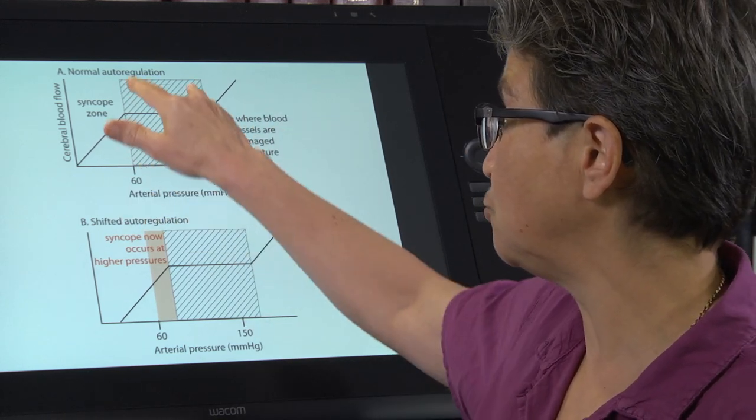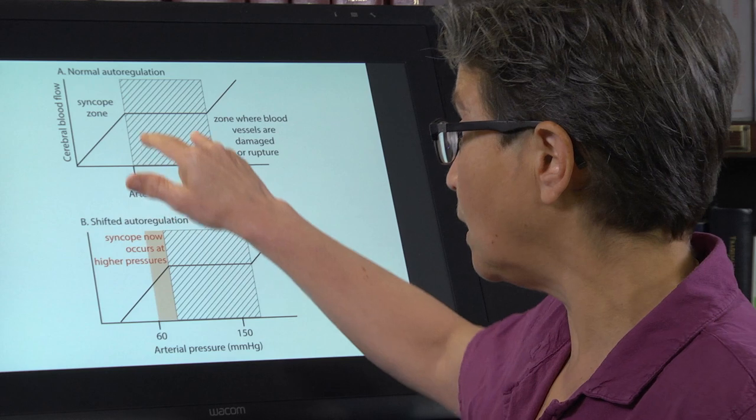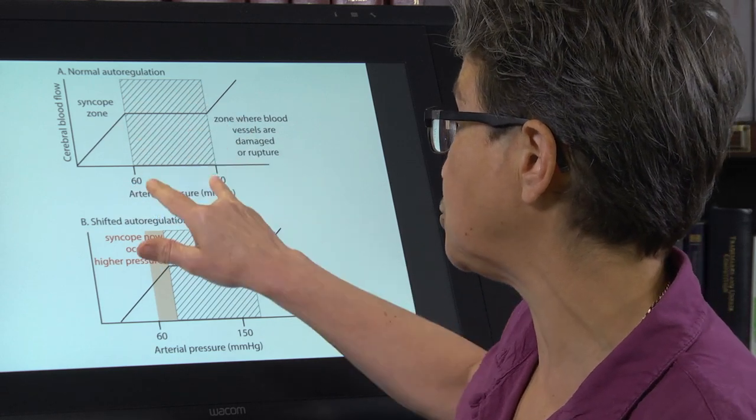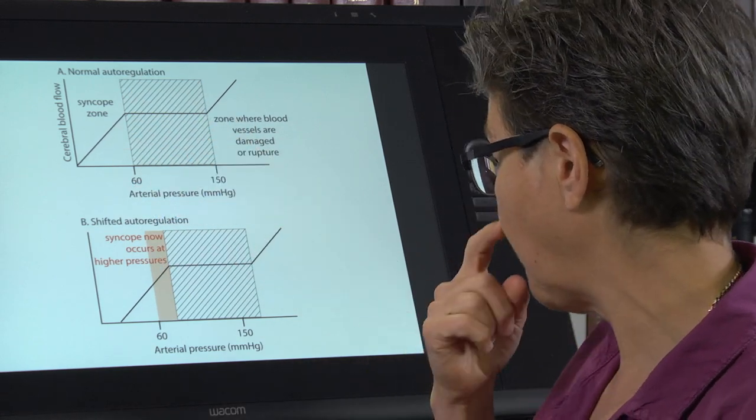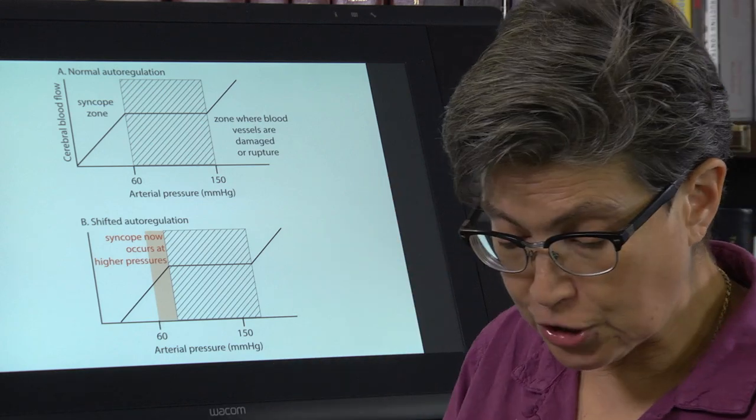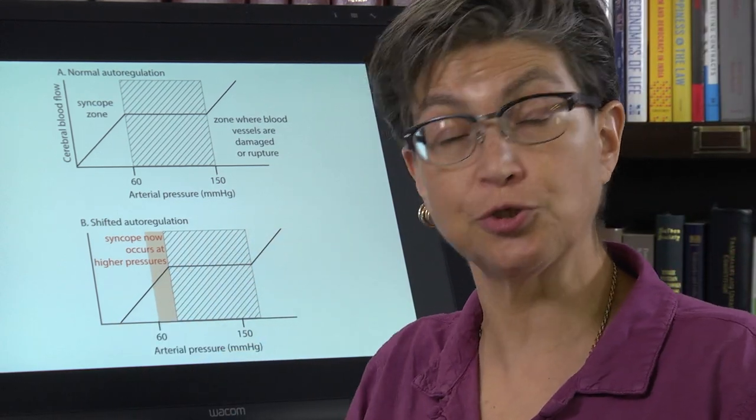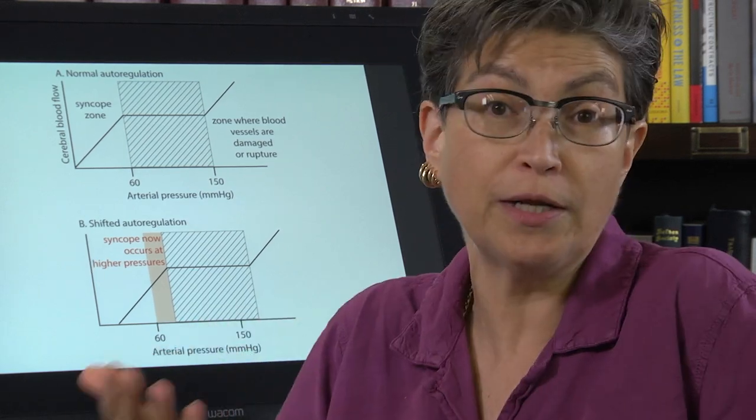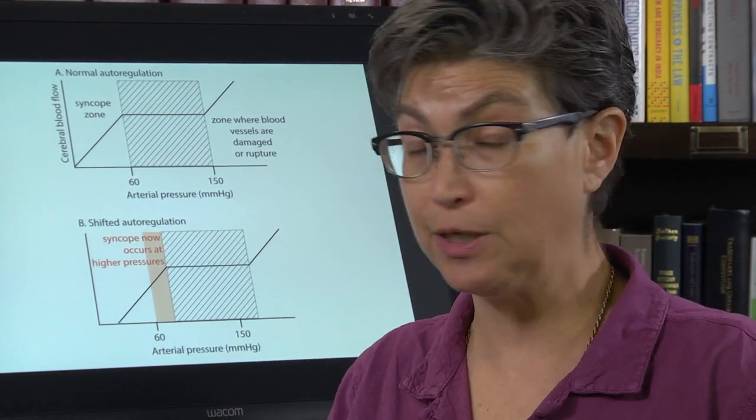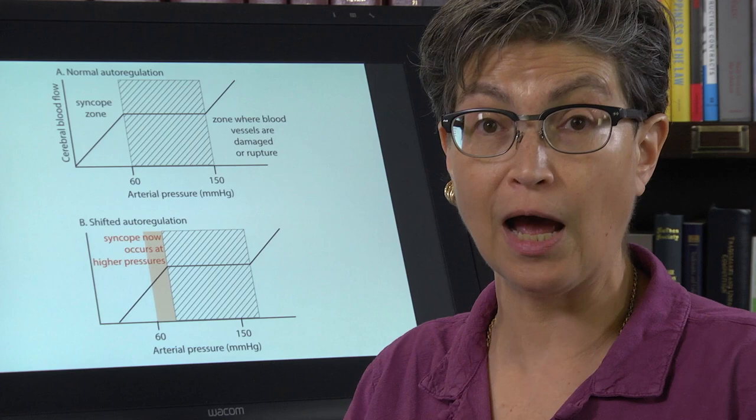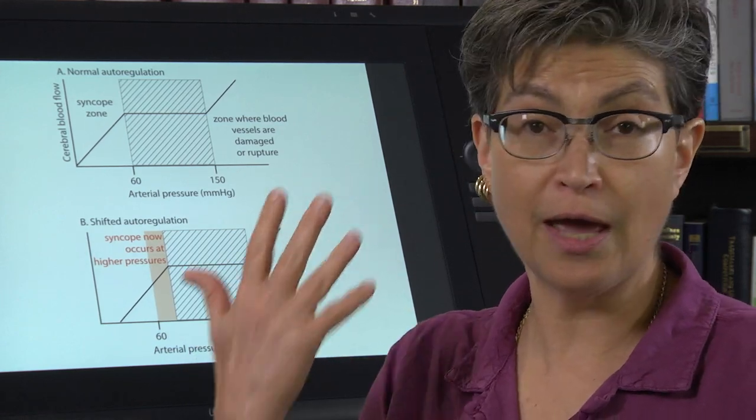So what we want to do is keep cerebral perfusion pressure in this regulated zone. Now there are situations when your mean arterial pressure will increase and that you want it to increase. One example is you're moving a lot, you're running away, you're exercising.